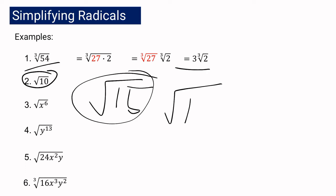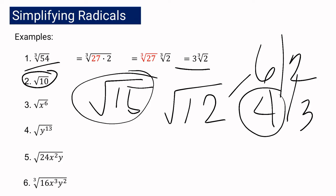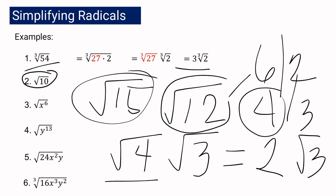If we have the square root of 12, the factors are 6 times 2, or we can have 4 times 3. In this case, our perfect square is 4. So we can write the square root of 12 as the square root of 4 multiplied by the square root of 3. Then we simplify the square root of 4, and we have 2 square root of 3. So the simplest form of the square root of 12 is 2 square root of 3.